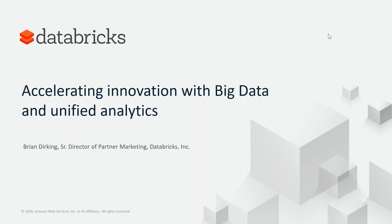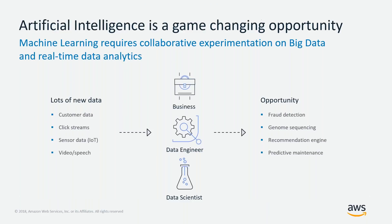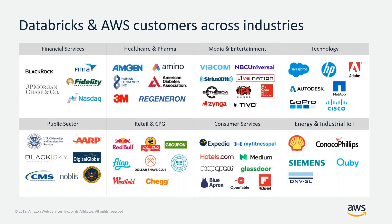At Databricks, our vision is to accelerate innovation by unifying data science, engineering, and business. We provide the unified analytics platform powered by Apache Spark. Databricks was founded by the creators of Apache Spark — we contribute 75% of the open source code, 10 times more than any other company, and we've trained more than 40,000 Spark users on the Databricks platform. Spark is widely recognized as the top engine for high-scale computing and analytics. Databricks is a cloud implementation of Apache Spark optimized by the team that originally created it, and has run on AWS since inception.